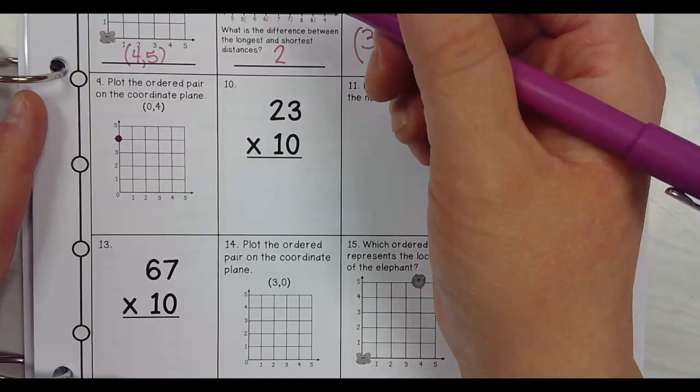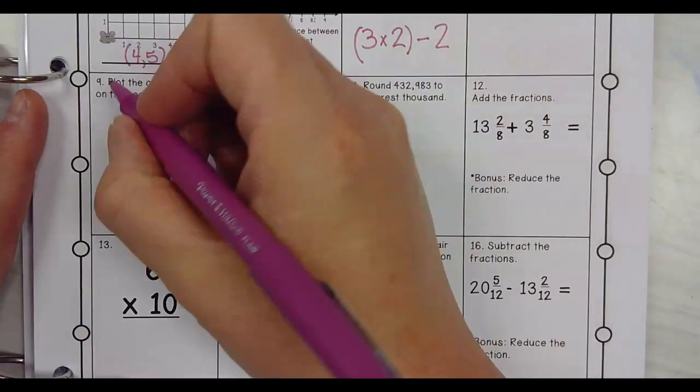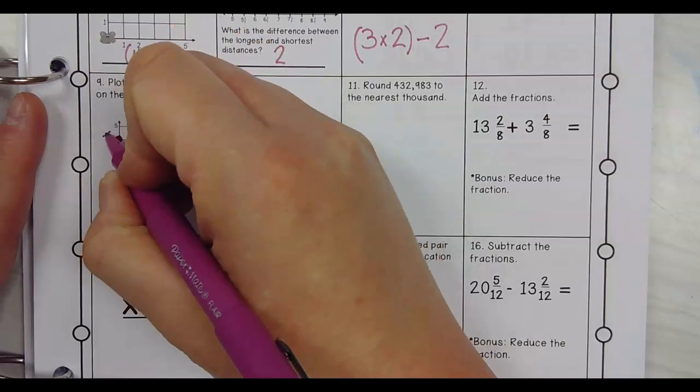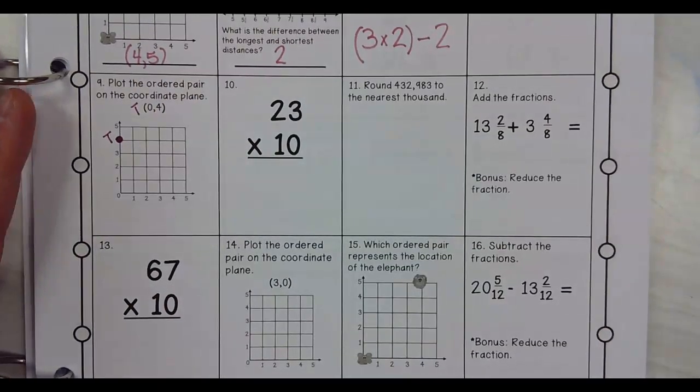0, 4 is right on the line. So if I called it T for tricky, you would label the dot T for tricky, right? Perfect.